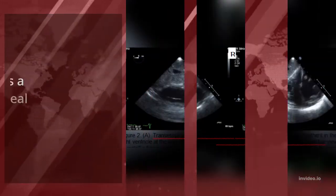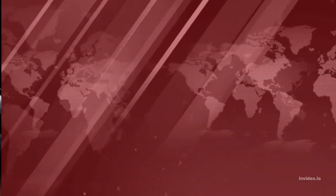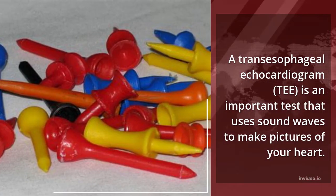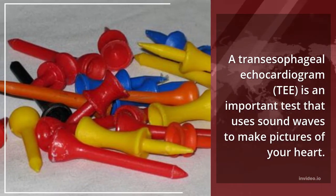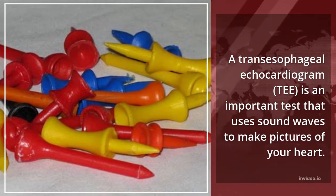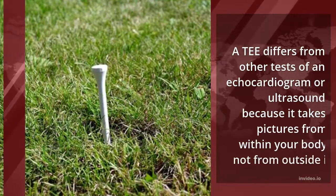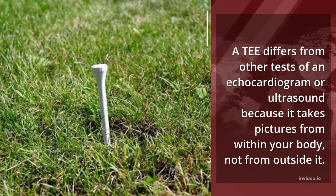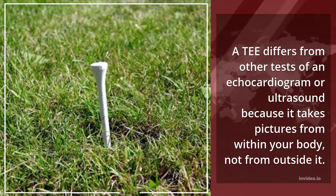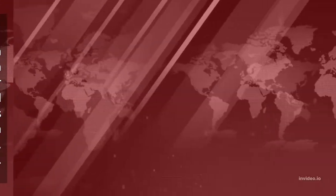What is a transthoracic echocardiogram? A transthoracic echocardiogram, or TEE, is an important test that uses sound waves to make pictures of your heart. A TEE differs from other echocardiogram or ultrasound tests because it takes pictures from within your body, not from outside it.